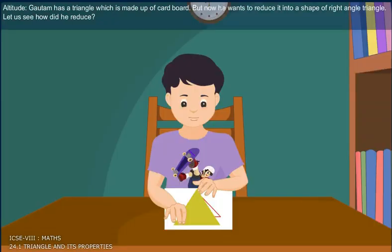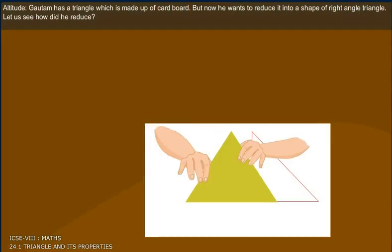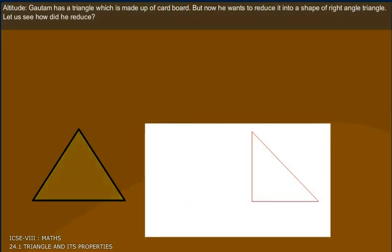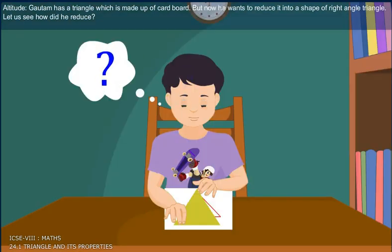Altitude. Gautam has a triangle which is made up of cardboard, but now he wants to reduce it into a shape of right-angle triangle. Let us see how did he reduce.